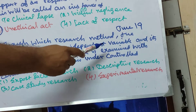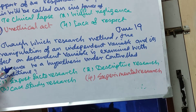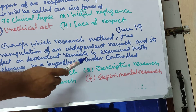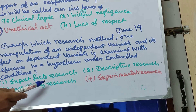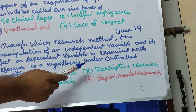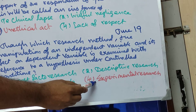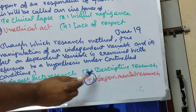Number 2: Through which research method is the manipulation of an independent variable and its effect on a dependent variable examined with reference to a hypothesis under controlled conditions? This is termed as experimental research.